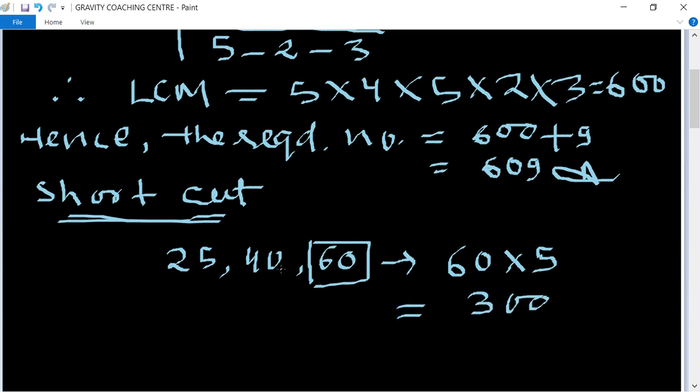Now check if 300 is divisible by 40. After checking, if we multiply by 2, we get 600 which is divisible by 40 as well. So 600 is the LCM.